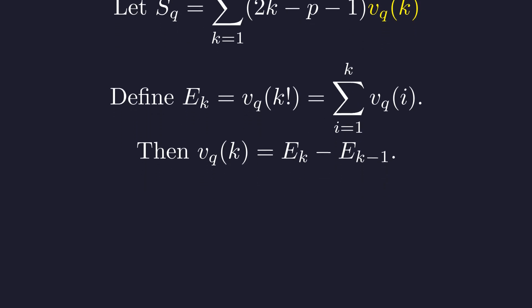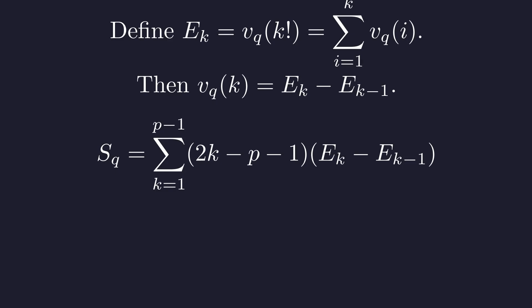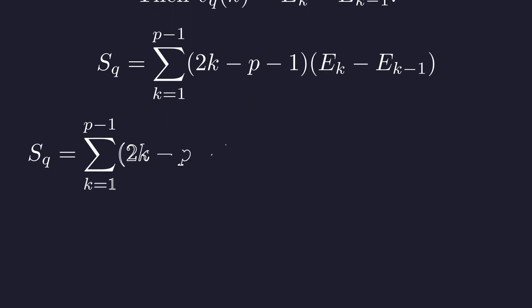Now watch what happens when we substitute this difference back into our sum. Beautiful! Now we have our sum written in terms of these E differences. This is exactly the setup we need for summation by parts. Let's expand this out and see the magic happen. I've split this into two separate sums, which will let us apply the summation by parts technique.